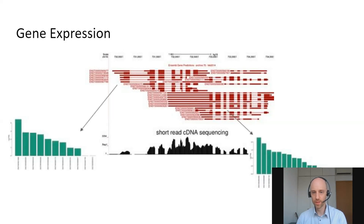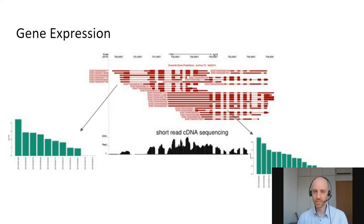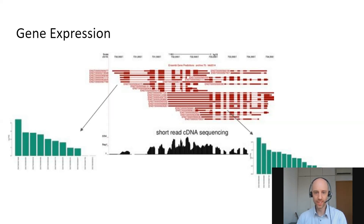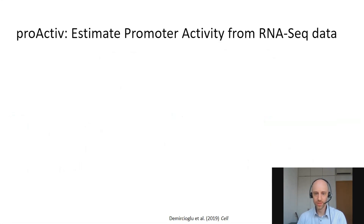If we apply isoform estimation to this example, we get something where each isoform for these two genes is estimated — and you can see that a lot of these isoforms are estimated to be active. That's partially due to the uncertainty in assigning these reads. There's a lot of uncertainty, and that makes this problem challenging. But for promoters, there are a few things we can do to deal with this.